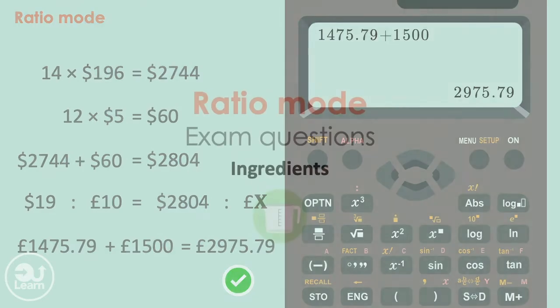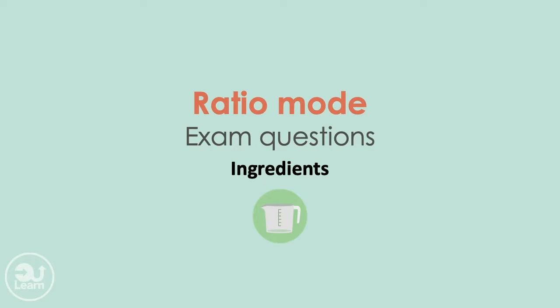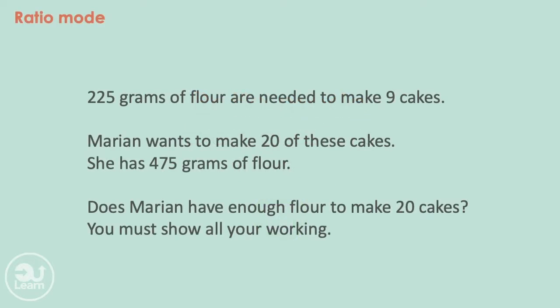Moving on to a common type of question, we have ingredients. 225 grams of flour are needed to make 9 cakes. Marianne wants to make 20 of these cakes. She has 475 grams of flour. Does Marianne have enough flour to make 20 cakes? You must show all your working out.